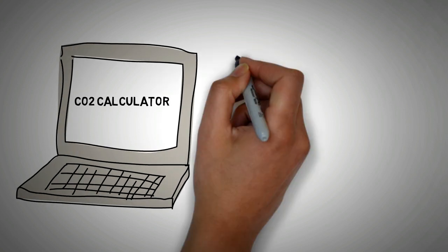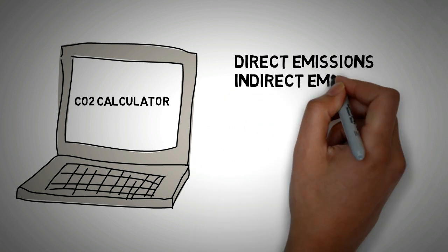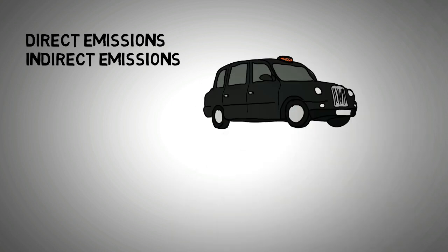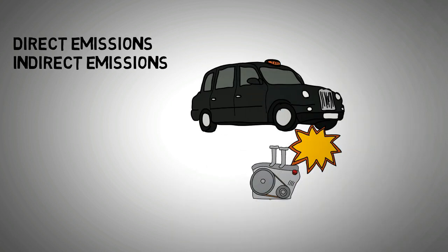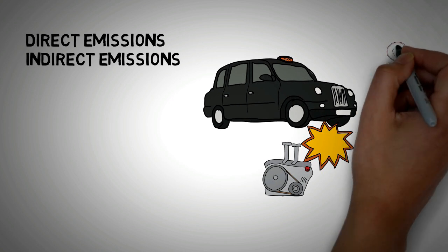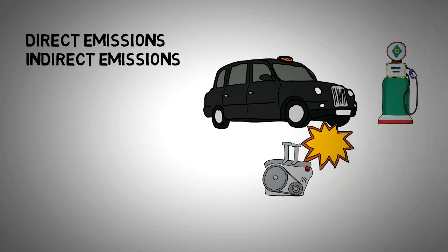Emissions are normally categorized as direct or indirect. For example, if emissions are to be worked out for a person that drives a taxi, then direct emissions will be the result of burning fuel in the car engine. Indirect emissions, however, will be all the emissions that were released in extracting the fuel, refining the fuel and transporting the fuel to the petrol station. Furthermore, the emissions that were released in making the taxi from the body panels to the tires to the paint are also indirect emissions.